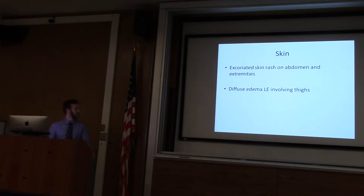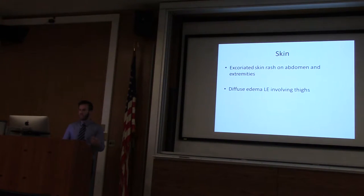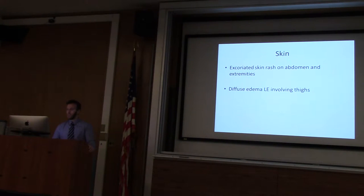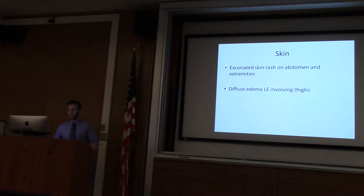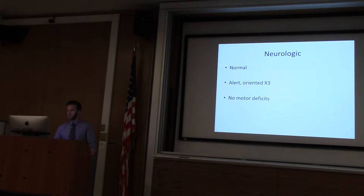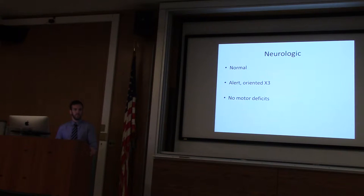Skin exam: excoriated skin rash on the abdomen and on the extremities — non-specific. Diffuse edema of the lower extremities going all the way up to the thighs. Neuro exam: normal — patient is alert and oriented, no motor deficits noted.